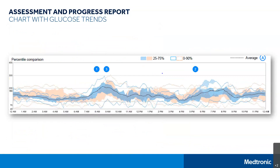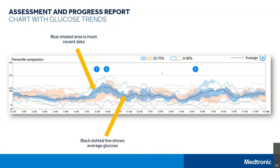Beginning with the glucose trends on the Assessment and Progress Report, this section visually highlights how your glucose tends to rise and fall. The important thing to remember is that anything in blue is the most recent data. If you choose to compare with a previous timeframe, that will show in orange. Areas with more shading — like on this chart between 8am and 9am — mean there is more variability with your glucose around that time. The black dotted line is the average glucose trend over the selected time period. In this example, you can see this person is normally at about 160 milligrams per deciliter at 11am.